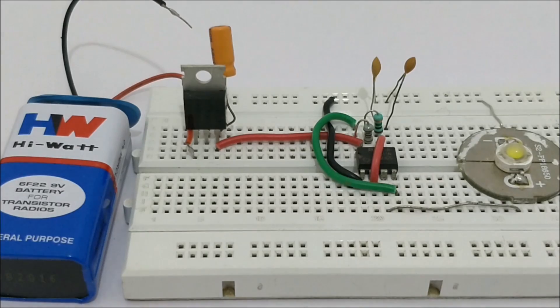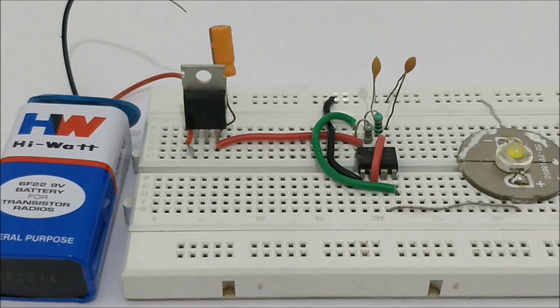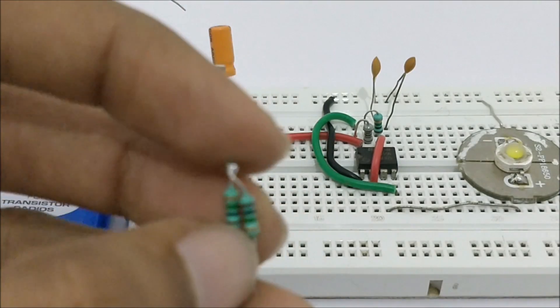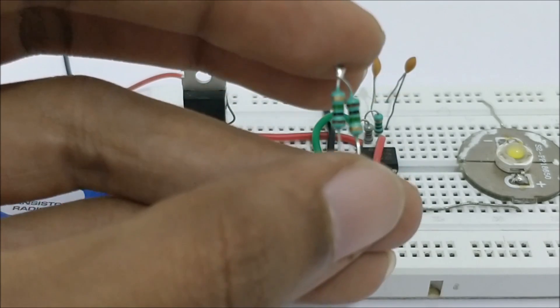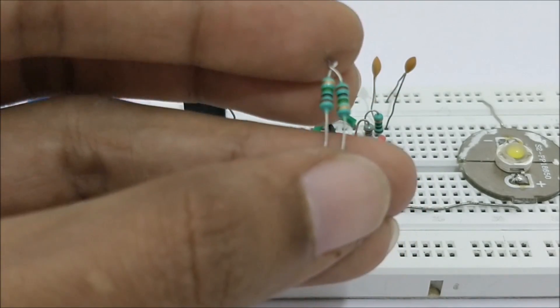You can vary this delay by changing the resistor value over here. You can use a 5 megaohm potentiometer if you have one, otherwise you can simply change it with other resistor values like I have a 2 megaohm resistor here.